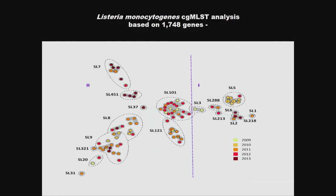Looking at this another way, we can analyze the genomes of all 100 Listeria monocytogenes isolates by comparing approximately 1,748 genes within each strain, and this gives rise to two different lineages. Lineage one on the right-hand side comprises Listeria monocytogenes strains more likely to be associated with human infections, and lineage two on the left-hand side are those strains more likely to colonize the food production environment or be found in food products.